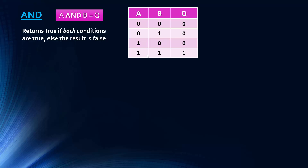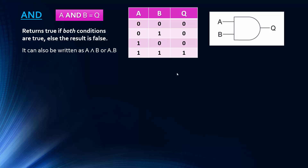Alternative notation for AND: it can be written as A ∧ B or A·B, where the dot is like a multiplication sign. Mathematically, zero times zero is zero, zero times one is zero, one times zero is zero, but one times one is one — which is where this notation comes from. You probably won't often see it written that way, but it helps explain the logic.